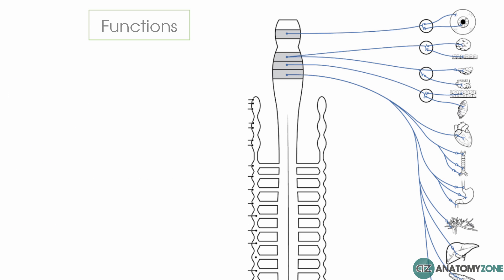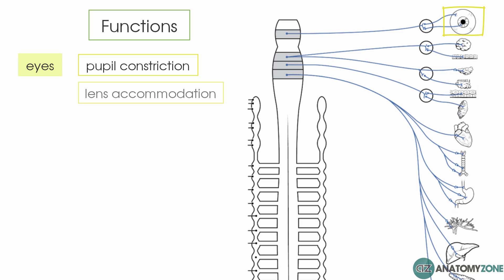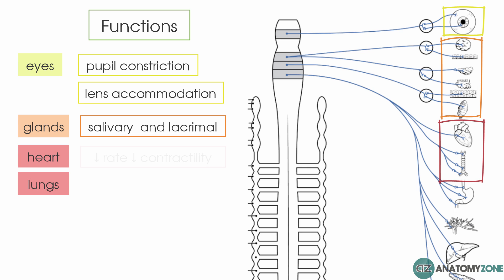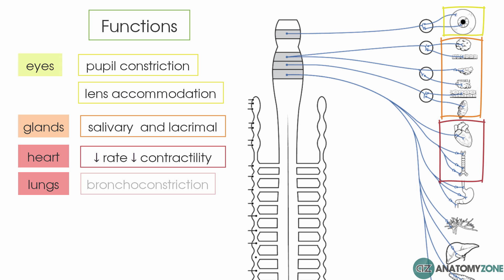In terms of the functions of the cranial component, it acts in the eyes to bring about constriction of the pupil and acts on the ciliary muscle to provide accommodation of the lens. It has secretomotor function to the salivary and lacrimal glands of the head. Regarding thoracic viscera, the heart and lungs are innervated: in the heart it decreases contractility and heart rate, and in the lungs it causes bronchoconstriction and secretomotor function to the mucous glands.